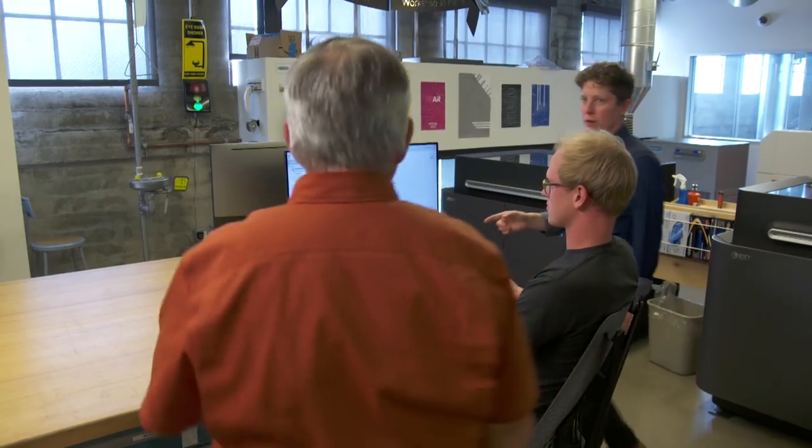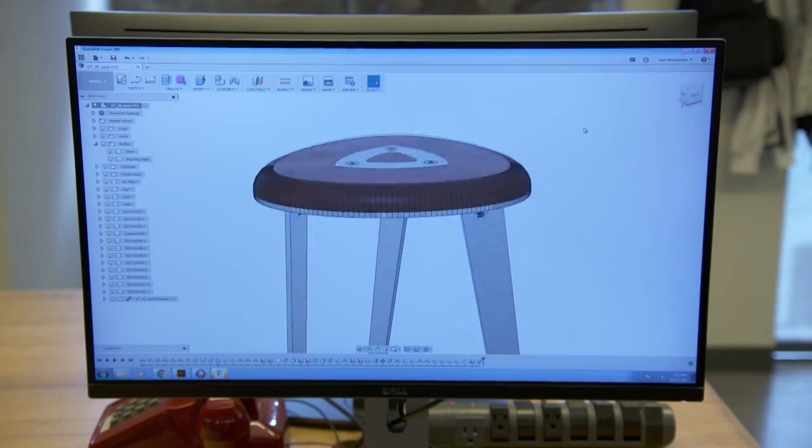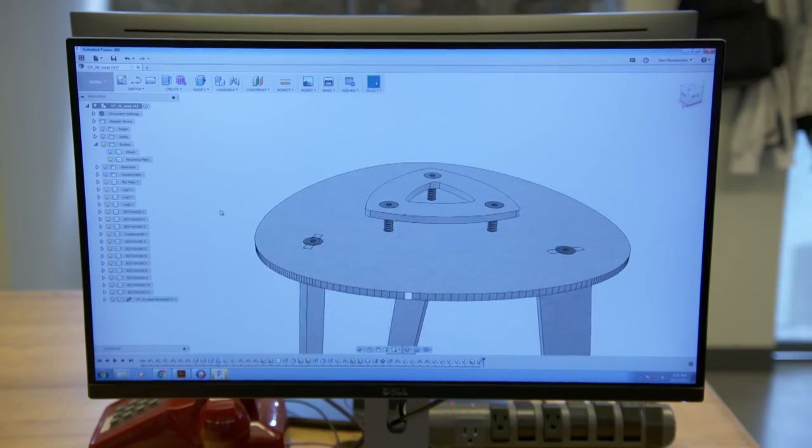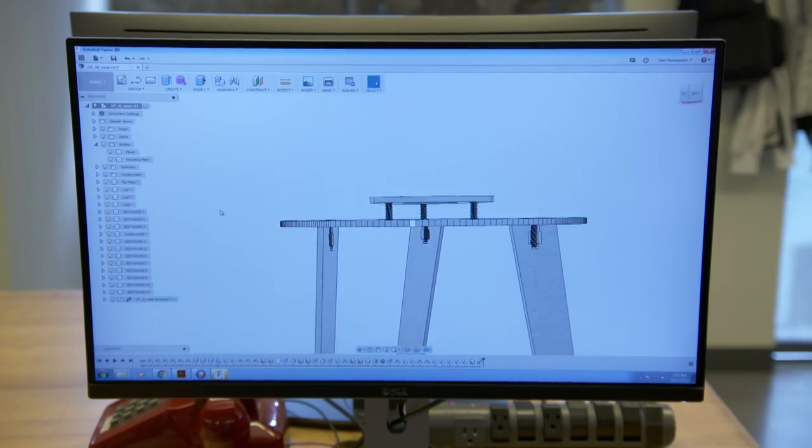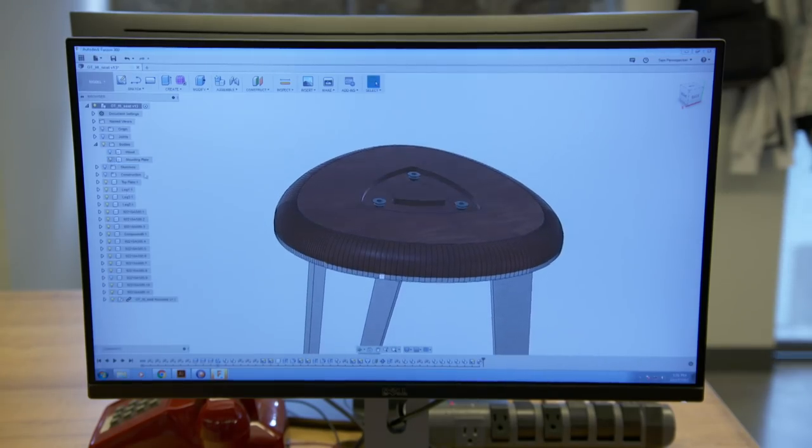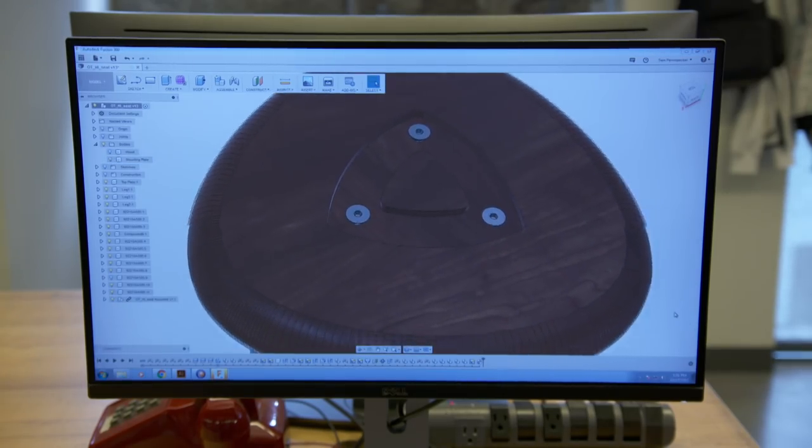So this is where it all starts. We need a 3D digital model and Sam has built this in our software to show you all of the different components to the stool along with the hardware and he's mapped specific materials onto each of those components. Well, it's pretty amazing,